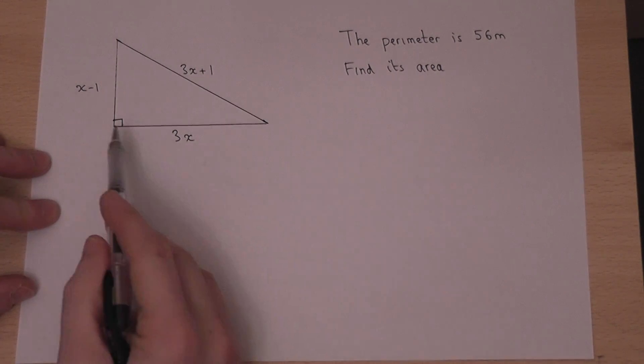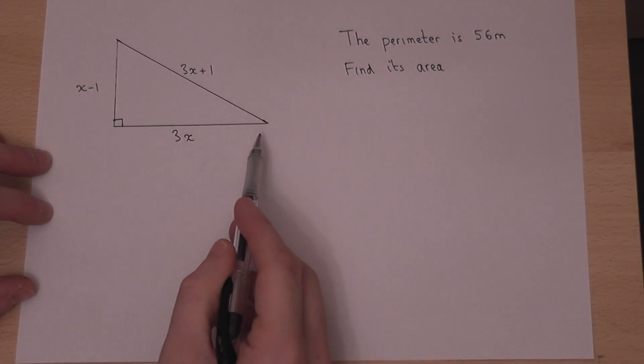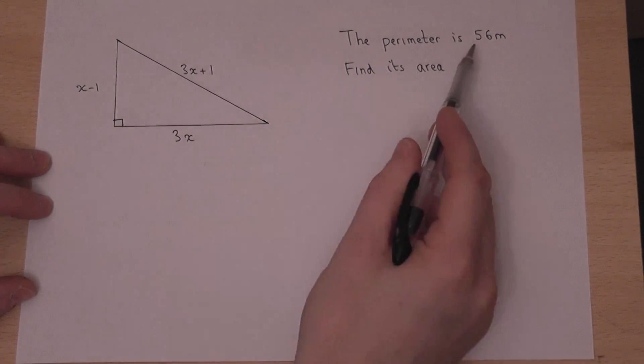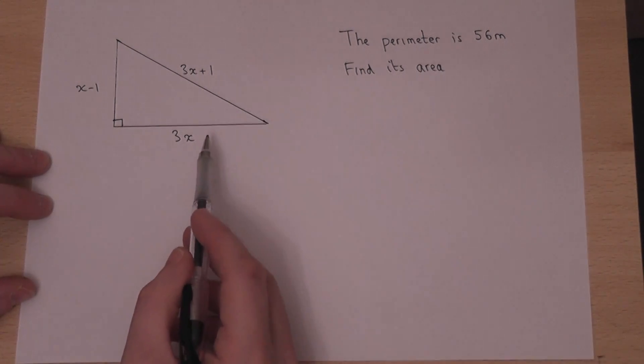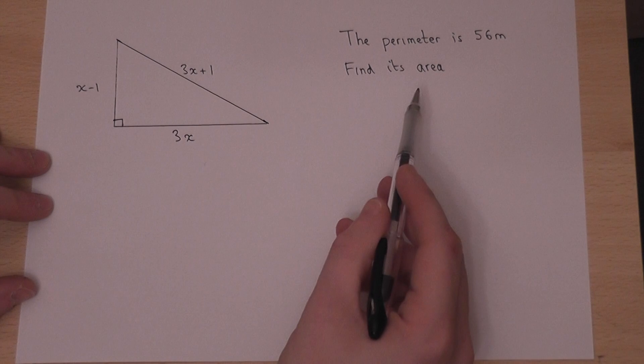This question involves algebra and a shape, and we're told that its perimeter is 56 meters, and we're asked to find its area.